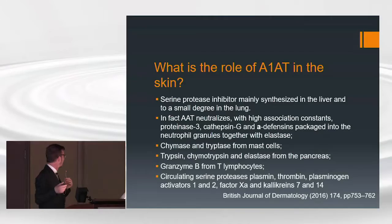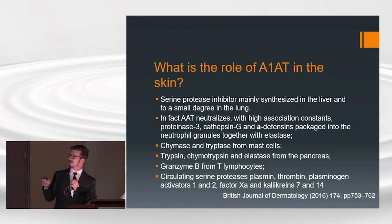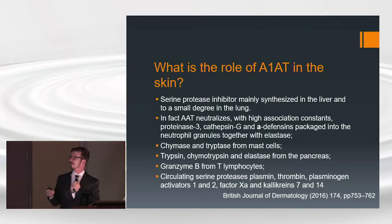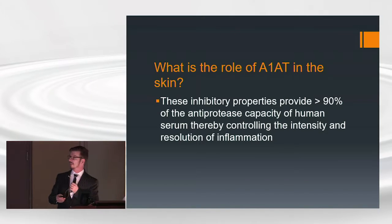There are a lot of things in our body that are modulated by alpha-1 antitrypsin. There are enzymes in the lungs, liver, pancreas, blood cells, skin cells, and even allergy cells in the skin — it controls all of those. The inhibitory properties of alpha-1 antitrypsin provide 90% of the anti-protease activity — anti-protease meaning the enzymes that destroy protein. So 90% is from this enzyme to modulate and control; it's a very very important enzyme.